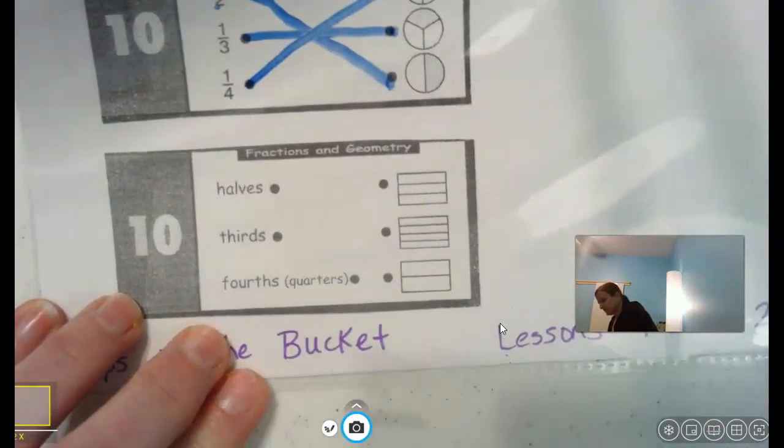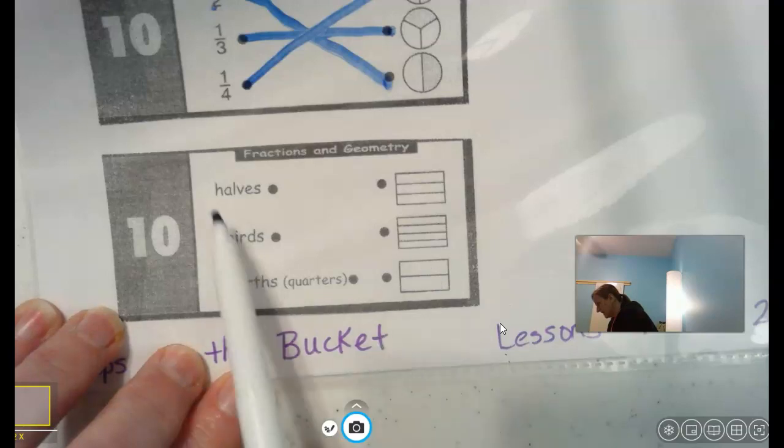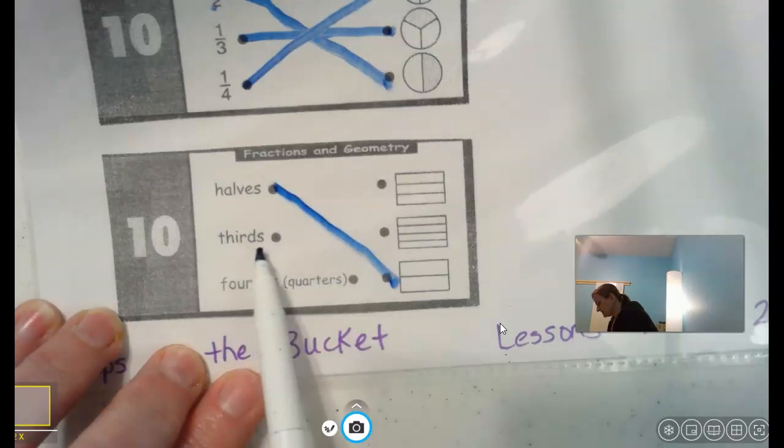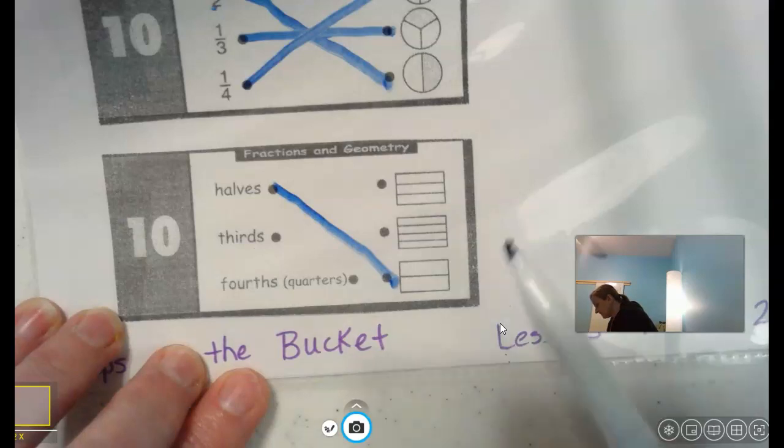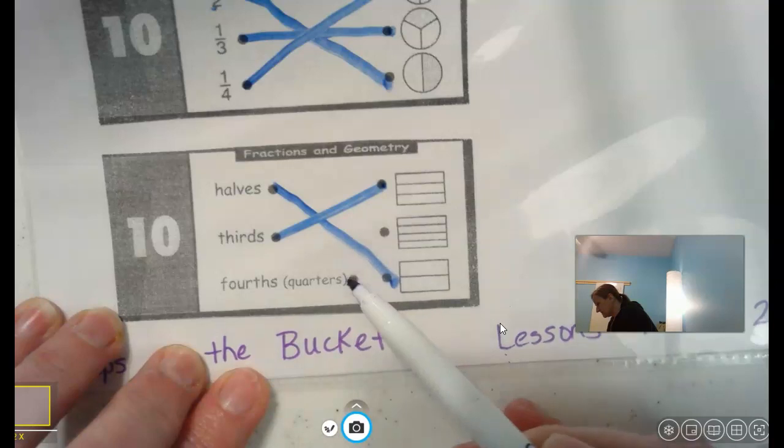And we're back to the words. So which one of these is cut into halves? Halves. Good. Which one is cut into thirds? What does thirds mean? You're right, three. And which one is cut into fourths? Or quarters. They renamed it quarters, and fourths does mean quarters. You'll learn more about that later.